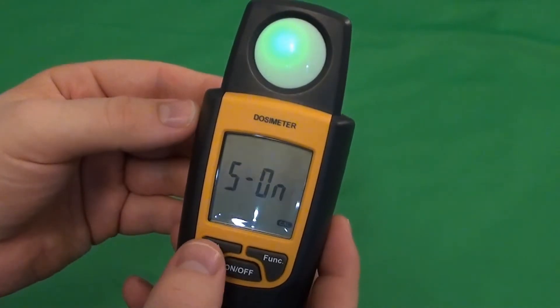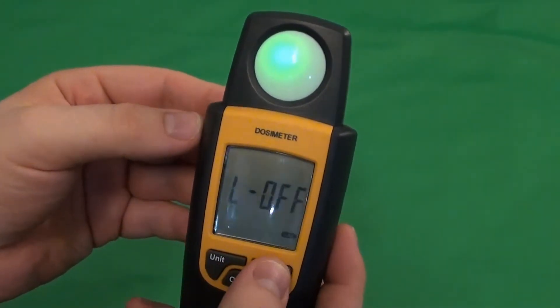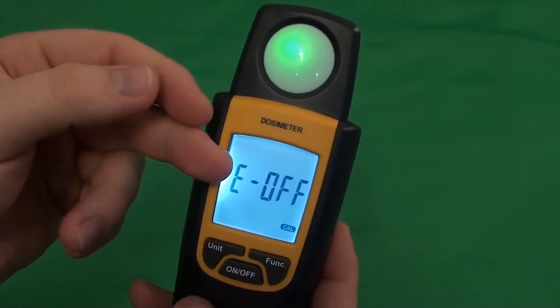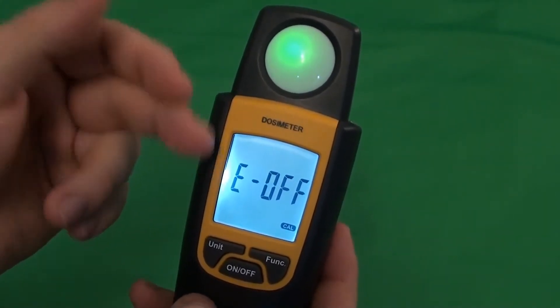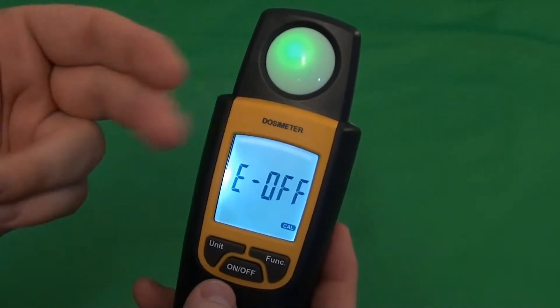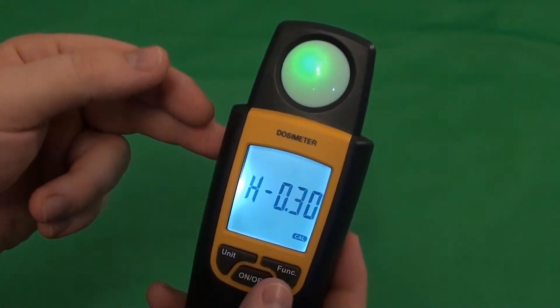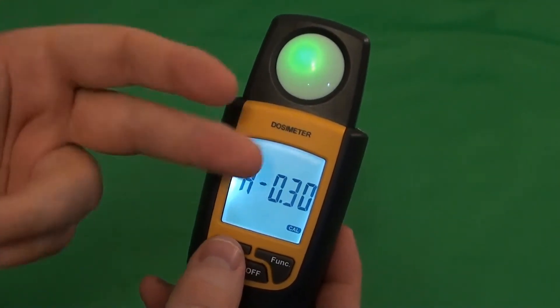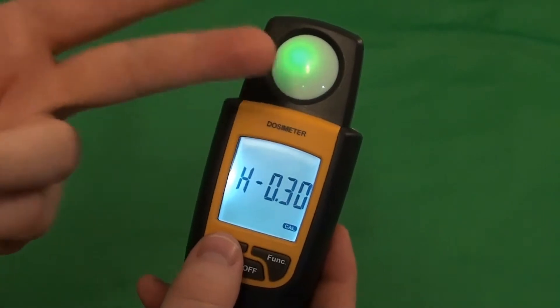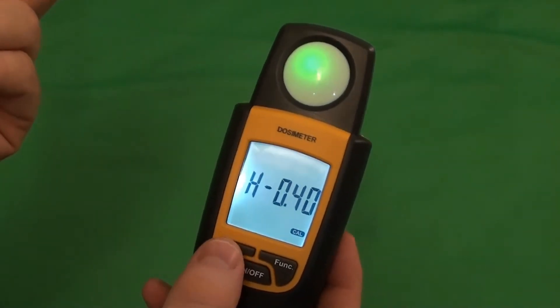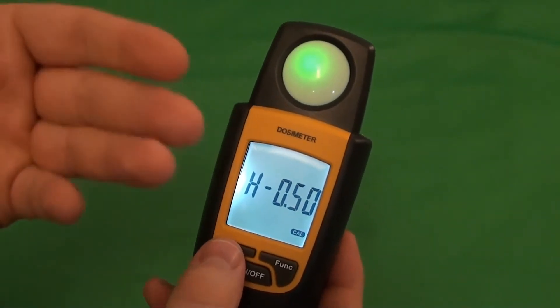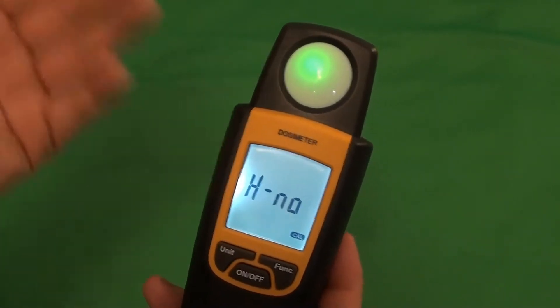You can disable or enable the sound. Enable the backlight. Enable speed measure mode which is not that accurate but it's fast. And you can set the alarm which can be set for 0.345 microsievert per hour or disable.